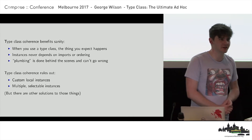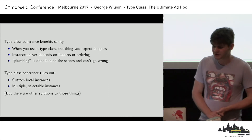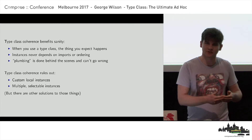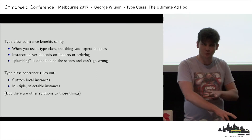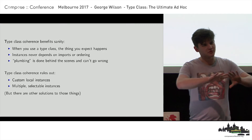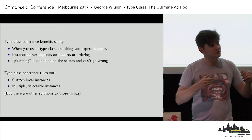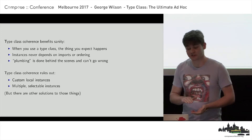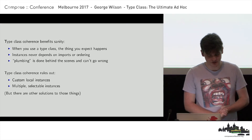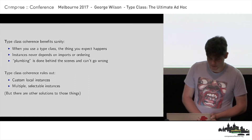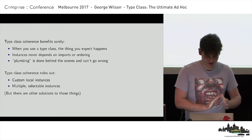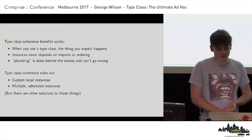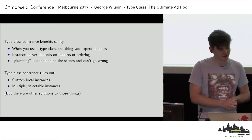There are some things ruled out by type class coherence that we might want though. For example, we can't do custom local instances — imagine if I wanted to compare two persons for equality differently in some corner of my code. And we can't have multiple selectable instances, such as changing imports to get access to a different instance. These things are ruled out by type class coherence. We have solutions that maintain coherence, but I don't have time to get into them — talk to me afterwards.